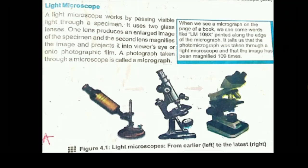You can look at the diagrams of light microscopes from earliest to the latest. The magnification of a light microscope is up to 1500x, meaning it can magnify an object up to 1500 times. The resolution of a light microscope is 0.2 micrometers, meaning it can differentiate between two points which are at least 0.2 micrometers apart.